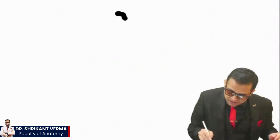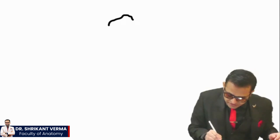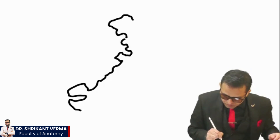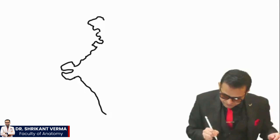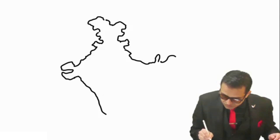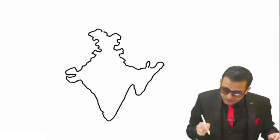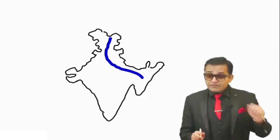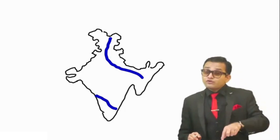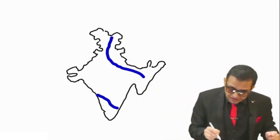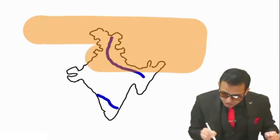To understand this beautiful concept, let me give you one simple example. Suppose this is our India country. We all know that the Ganga river flows on the north side, and Krishna, Kaveri, Godavari flow on the south side. So can you tell me — will Ganga supply Kerala or Tamil Nadu? No, never. The Ganga flows on the north side, so it will supply the north states.